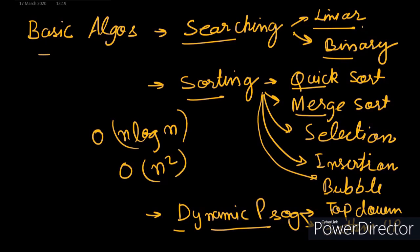Why should you know an O(n²) algorithm if you already know an O(n log n) algorithm? The reason is simple — there are certain problems which could be solved more efficiently using selection sort or bubble sort than quicksort or merge sort. You should also know the best and worst case time complexities of these algorithms and whether they use extra space.